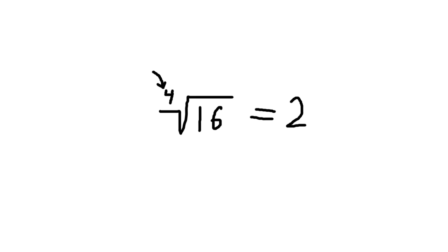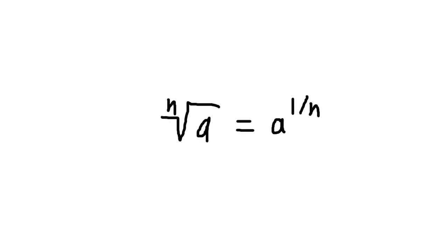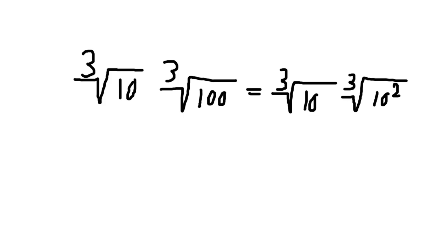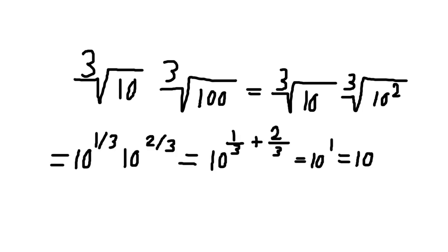Furthermore, you can just write the nth root of a number as a to the power of 1 divided by n. This allows us to conclude things like the third root of 10 times the third root of 100 is equal to the third root of 10 times the third root of 10 squared, which means we just get 10.